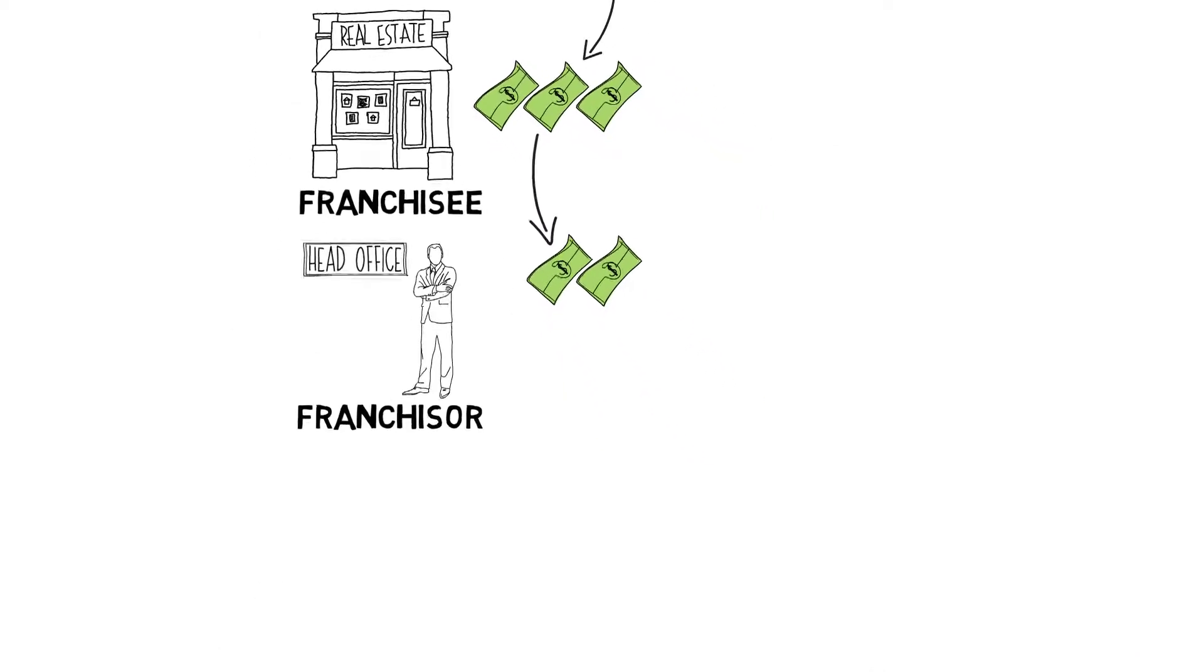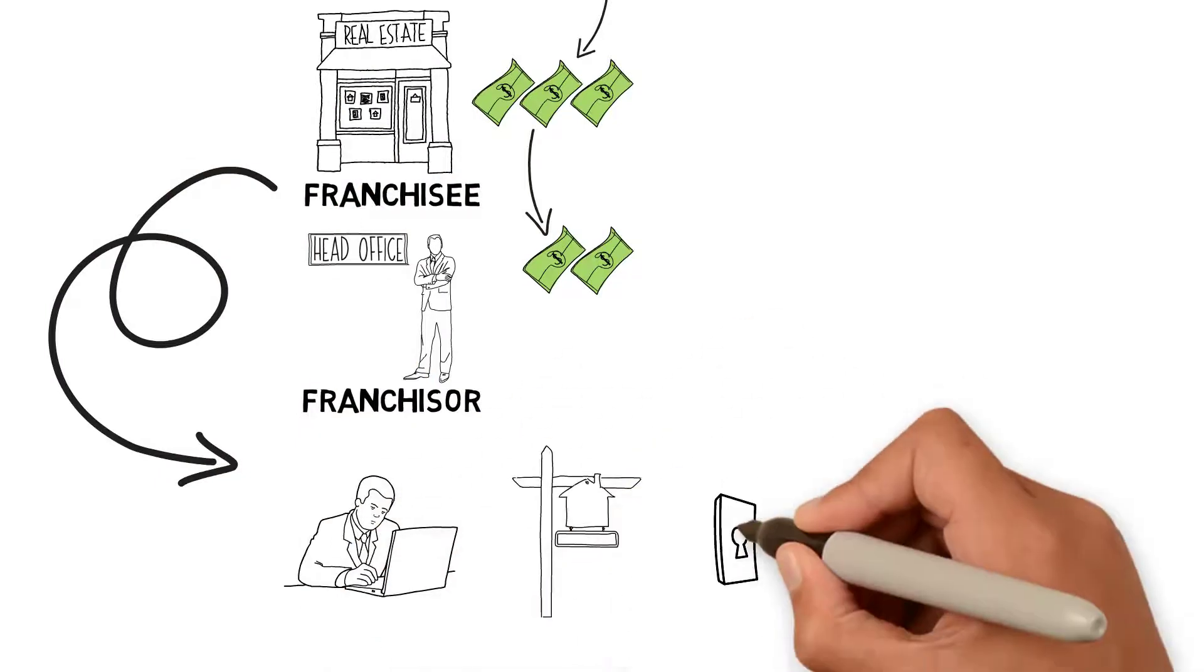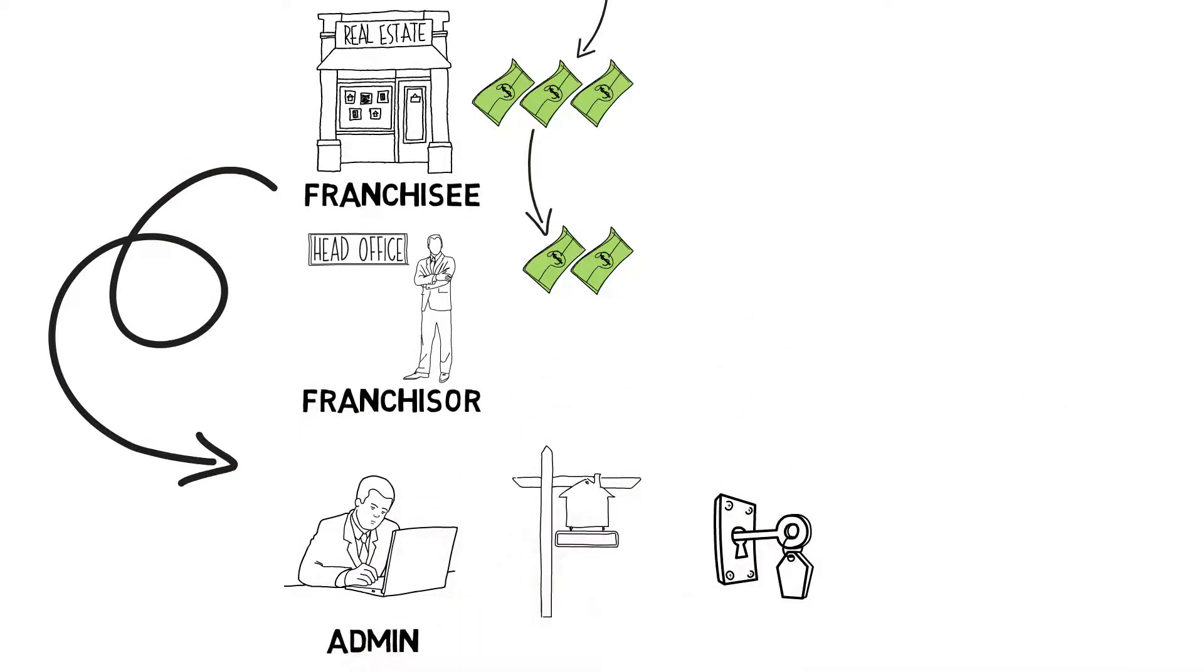That business owner, the franchisee of the local real estate office, has admin staff to pay, rent, and other costs like insurance and various other things. That gets boiled down even further, cutting away more of the commission.